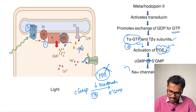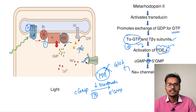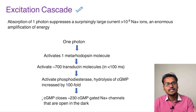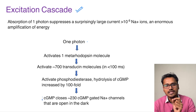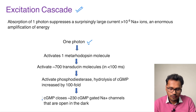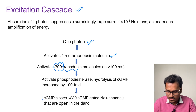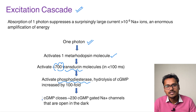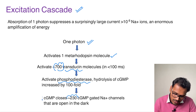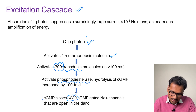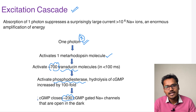The closed sodium channel reduces glutamate, causing hyperpolarization and activation of bipolar cells, which transmit the signal to the brain. The excitation cascade in light is remarkable in its amplification: one photon activates one metarhodopsin 2, which can in turn activate 700 transducin molecules, which activate tremendous amounts of PDE, increasing cyclic GMP conversion to its inactive form by 100-fold. This closes approximately 330 cyclic GMP-gated sodium channels — demonstrating that even a single photon can generate visual impulses.